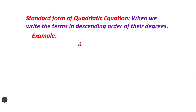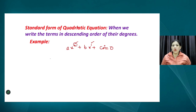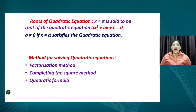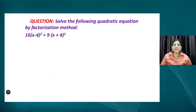In the standard form we arrange degrees in descending order: X to the power 2, then X to the power 1, then X to the power 0. An example of a Quadratic Equation is 2X squared minus 7X minus 4X plus 7 equals 0. In the previous session we covered the factorization method. Today we will discuss the completing the square method and the quadratic formula. But first, let us solve one more question using the factorization method.